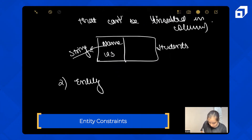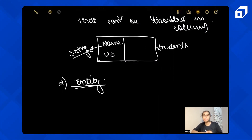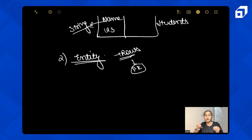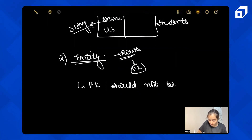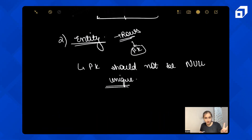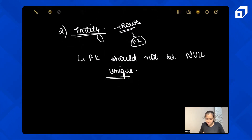The second one is Entity Integrity Constraint. Real entities are stored as rows in a table, and rows are identified by primary keys. Entity integrity constraint deals with the validity of your entities — how do you check validity? By saying that the primary key should not be null and should be unique. Entities should not have any mistake — the primary key should not be null, missing, or blank, and it should be unique.